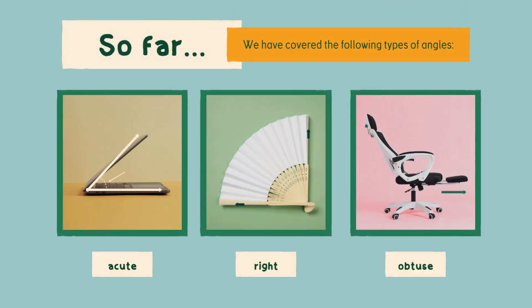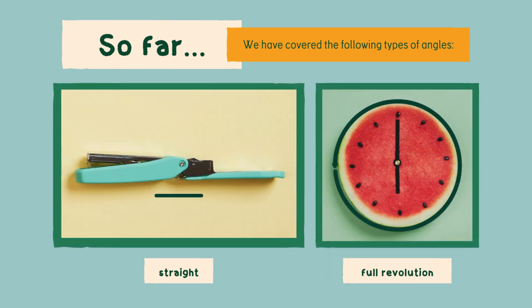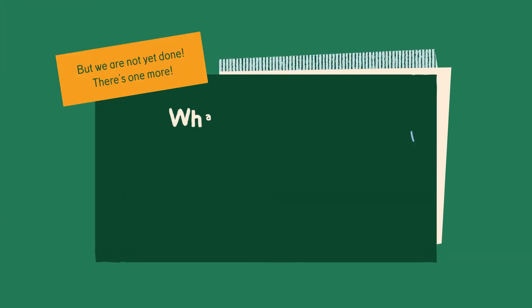So far, we have covered the following types of angle: acute, right, obtuse, straight, full revolution. But we are not done yet. There's one more angle.